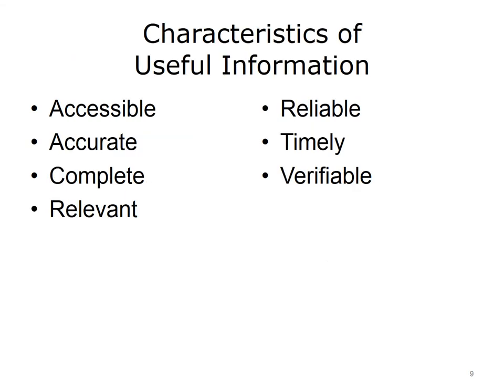Not all information is useful. Here are some characteristics of useful information. First, information has to be accessible — it must be available at the right time and in the right format. For example, a system that supports e-prescribing must be able to display medication information, dosages, and possible interactions between different medications in about the same amount of time it would take to write the prescription by hand and look up the medication in a pocket reference guide. Information must be accurate — if it contains errors, it is not usable. Information should be as complete as possible; if important data is missing, the information may not be useful. For example, having an incomplete patient history can result in improper care.